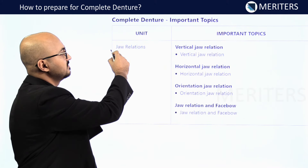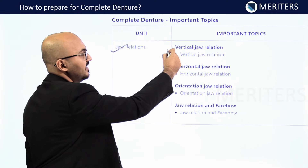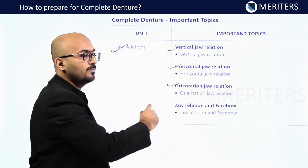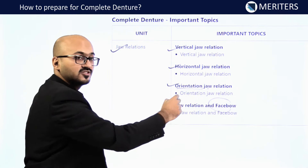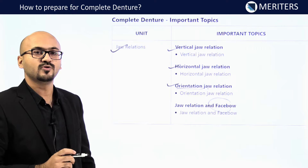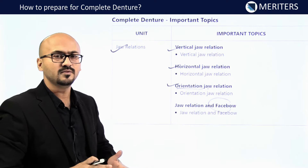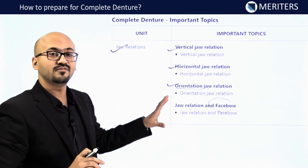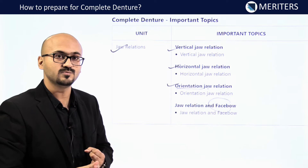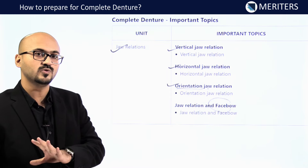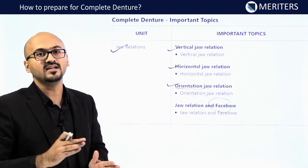For jaw relations, all three — vertical, horizontal, and orientation — are equally important, but put a little more emphasis on the facebow part of orientation jaw relation. Read Nallaswamy and Rangarajan for conceptual clarity on all these topics, and refer to Boucher for image-based questions on kinematic and arbitrary facebow.